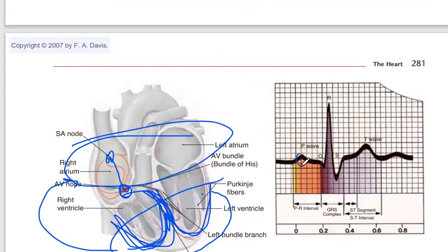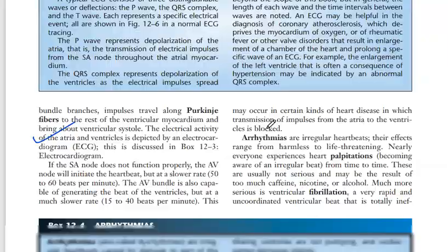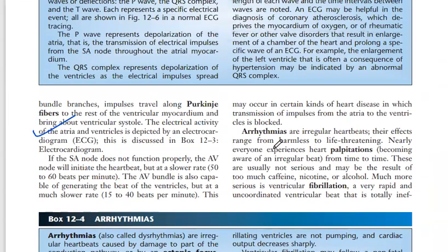This is the P wave, Q wave, R wave, S wave, and T wave. Each wave corresponds to when a particular impulse occurs. We will talk about ECG in detail after completing this chapter.